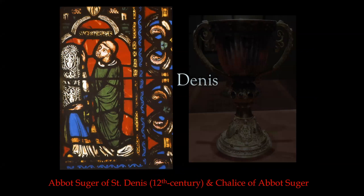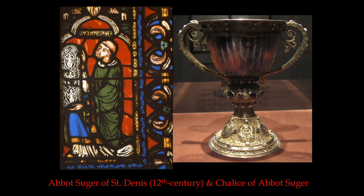Abbot Suger had been an oblate to the monastery — a child given to the monks to be raised, which is how the monks replenished their ranks. Suger eventually became abbot and an extremely powerful man. When the king of France, Louis VII, went off on the Second Crusade, he left Suger in charge of the country. Why leave a monk in charge of France? Because if you leave some duke or baron in charge, he may well make himself king by the time you return, but a monk cannot rise above his monastic station — so he's someone safe you can trust.